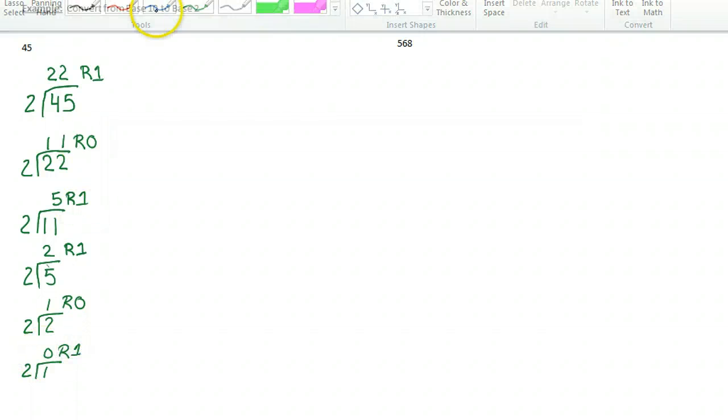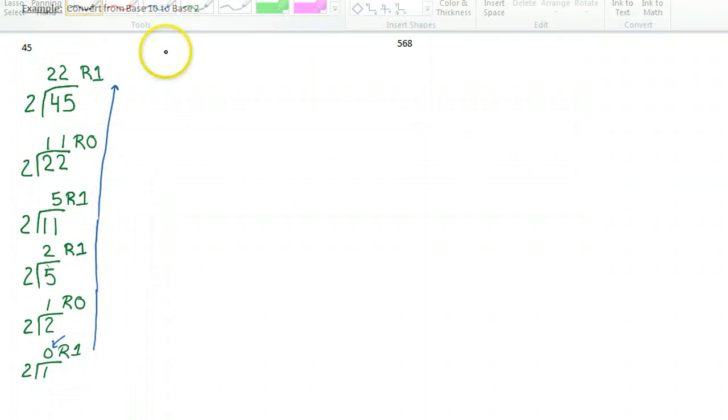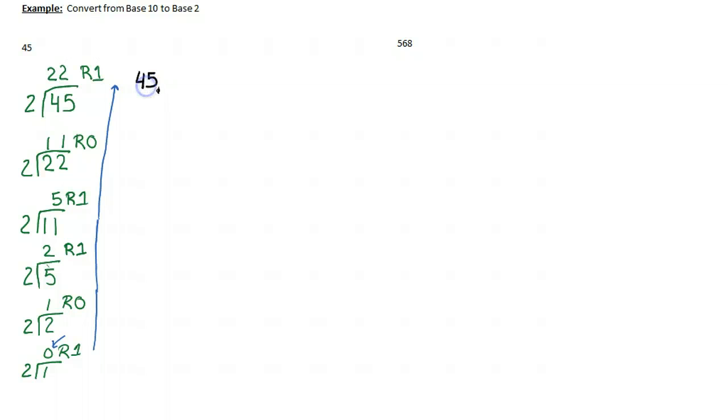And then as soon as I hit a 0 there, I know I'm done. So all I do is I take this and I rewrite it out in this direction. So therefore, I know that 45 in base 10 is the same as 101101 in base 2.